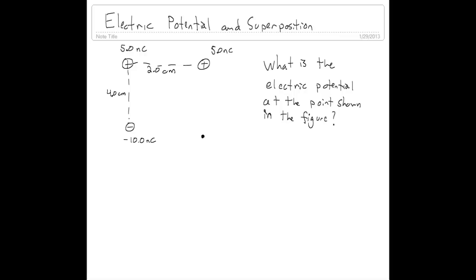Electric potential can be kind of confusing, so let's do a problem involving that. Let's take this setup: we have three charges, two five nanocoulomb charges and one negative ten nanocoulomb charge. We want to know what is the electric potential at the point shown in the figure.